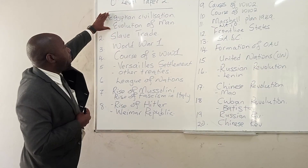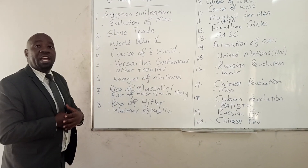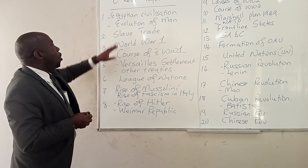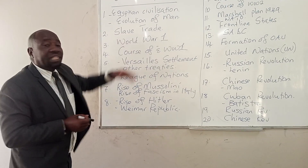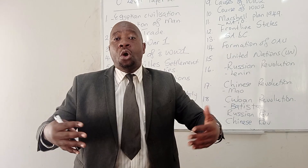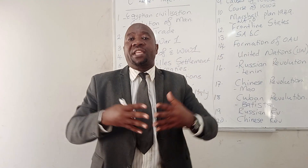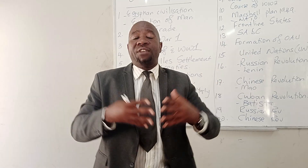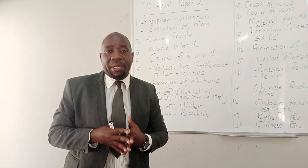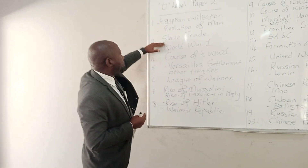Question number one is usually on the Egyptian civilization or the evolution of man. Number two, they can ask you on the slave trade — the activities of slave trade and slavery, what took place during that particular period, how Africans were enslaved, and what eventually led to the stopping or abandonment of slave trade and slavery.